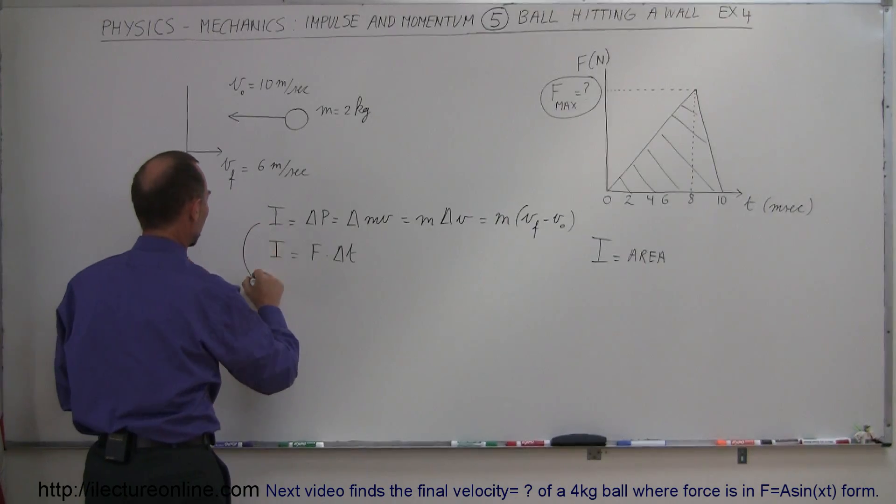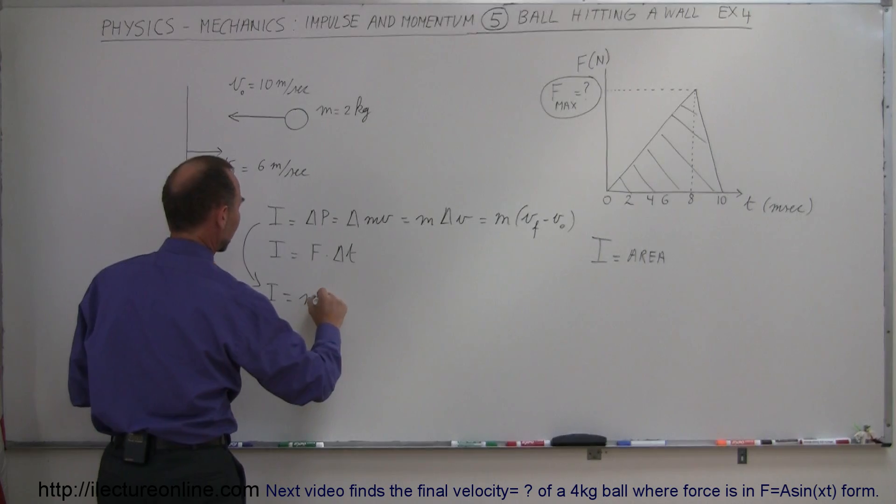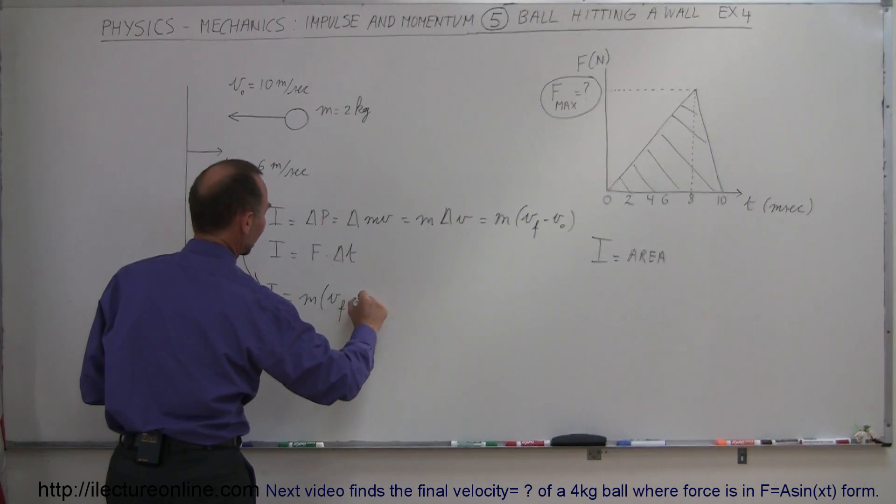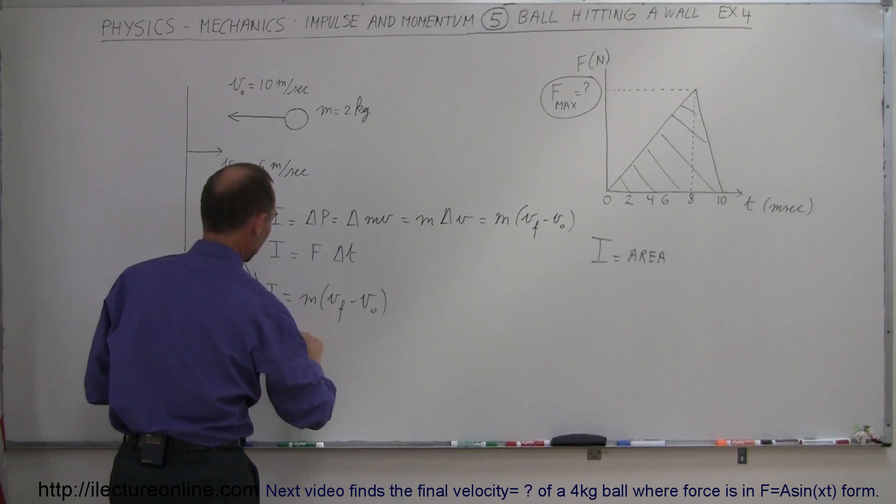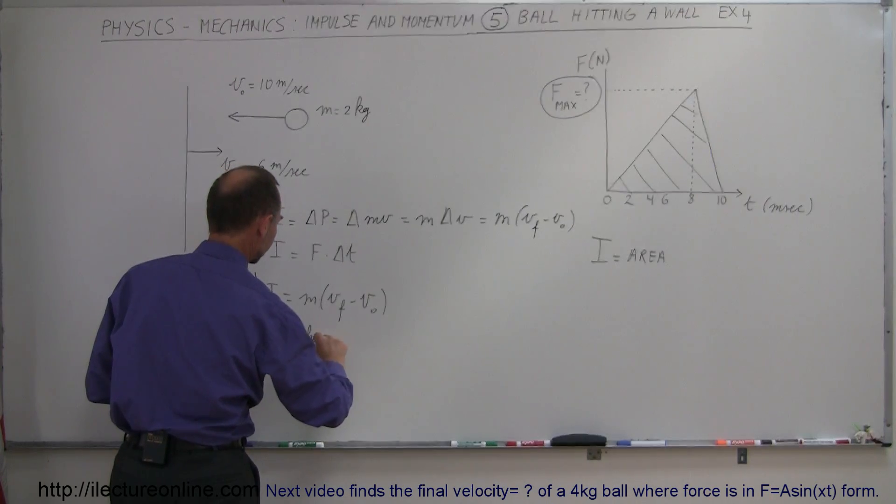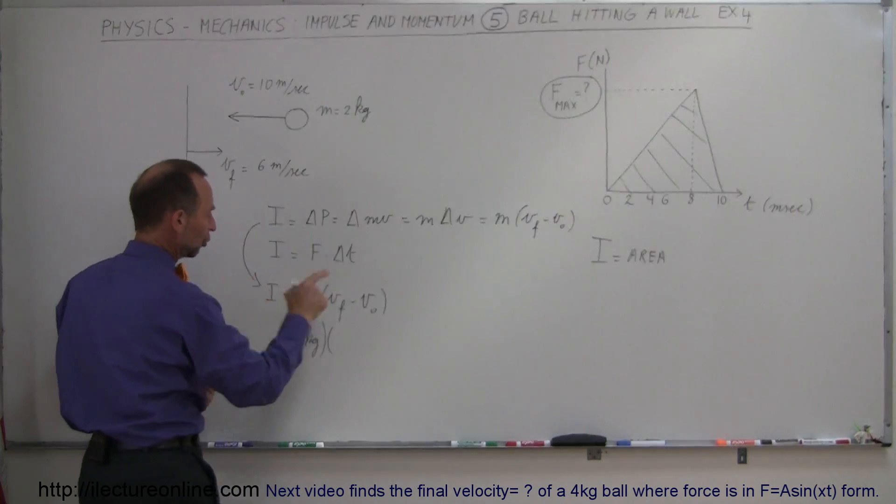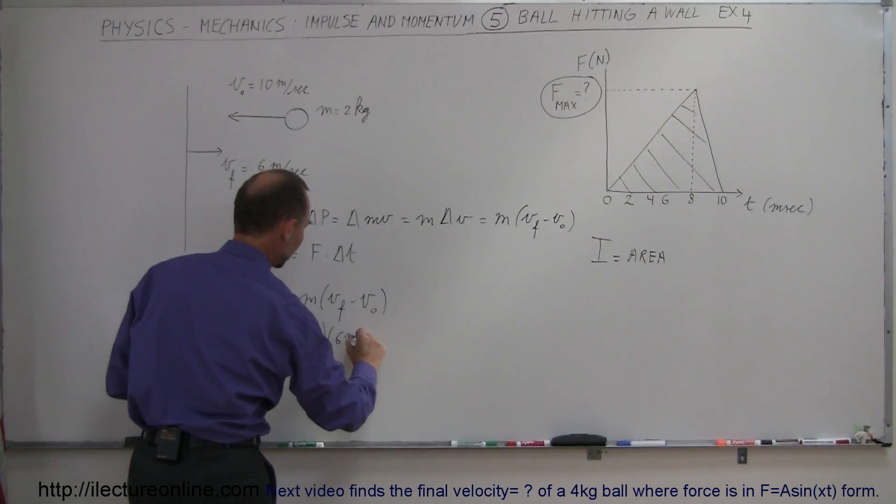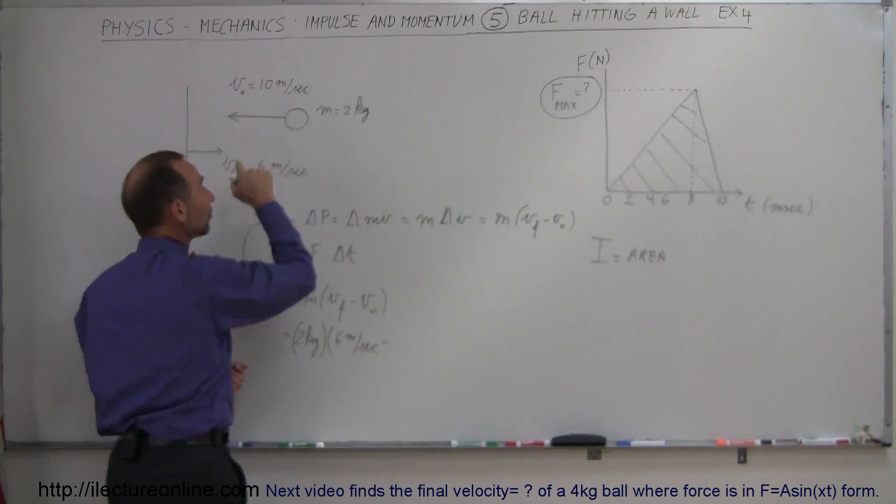All right, so let's calculate the impulse using this first equation. It's equal to the mass times v final minus v initial. So that would be 2 kilograms. v final is 6 meters per second to the right, so that's a positive 6 meters per second. And we subtract from that the minus 10 meters per second, minus because it's to the left, and that's by convention, so minus 10 meters per second.